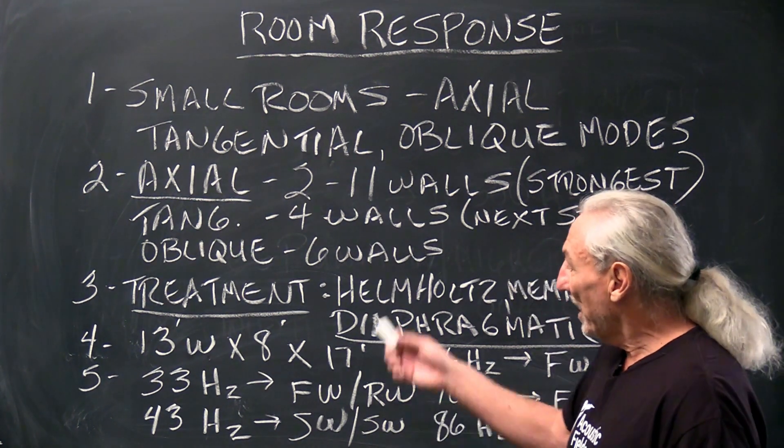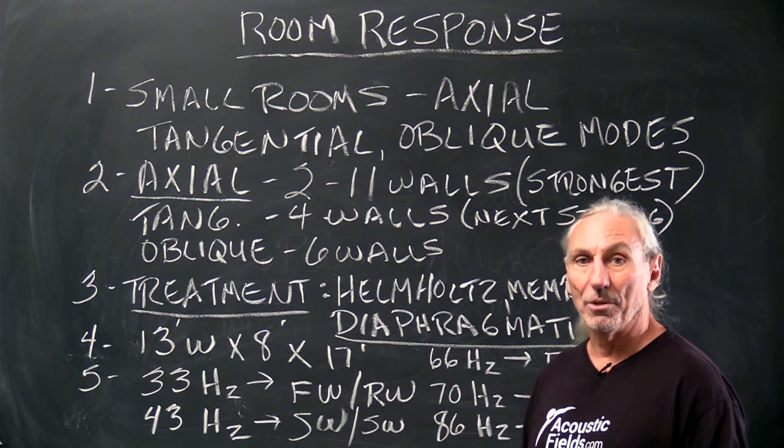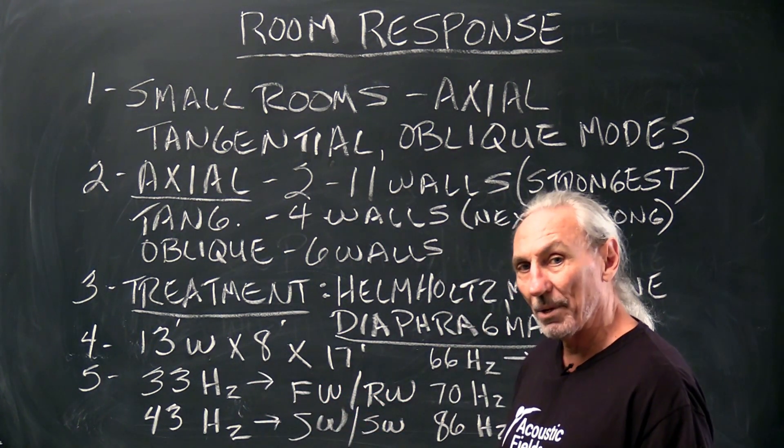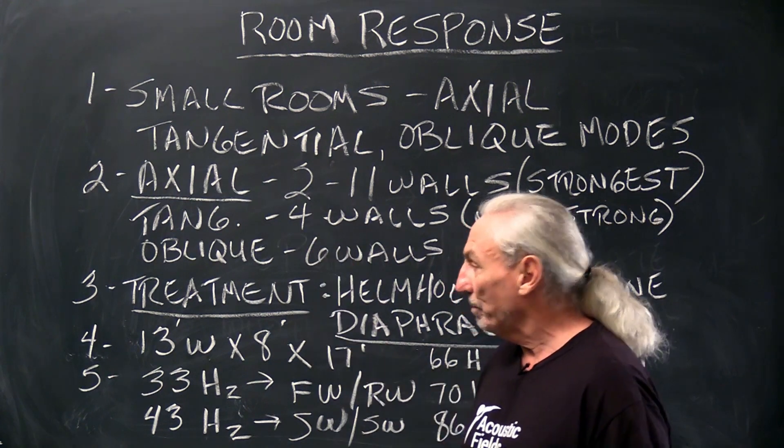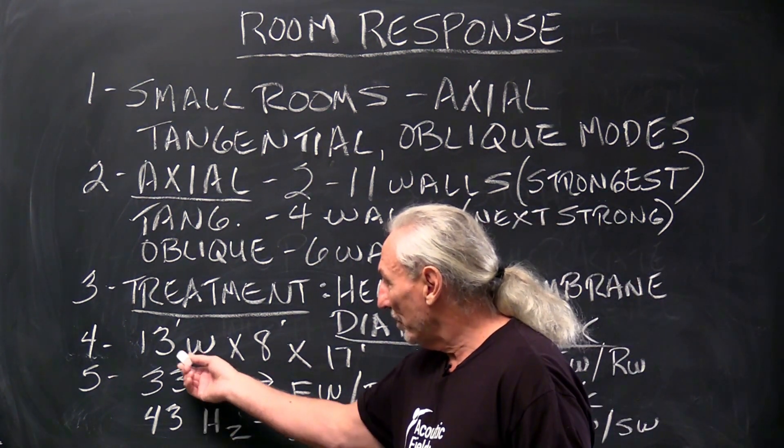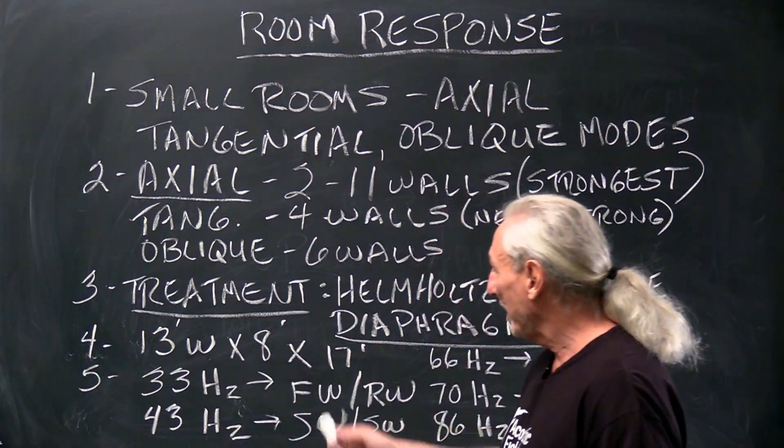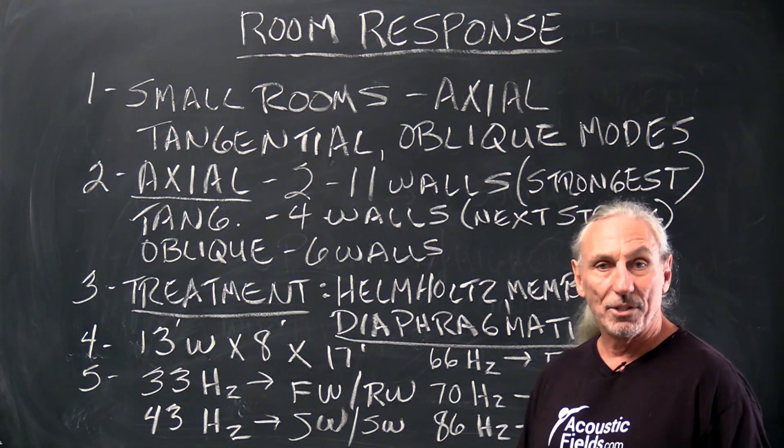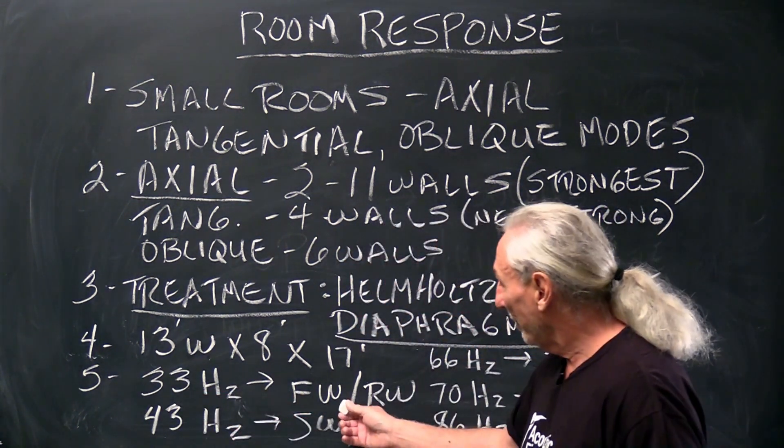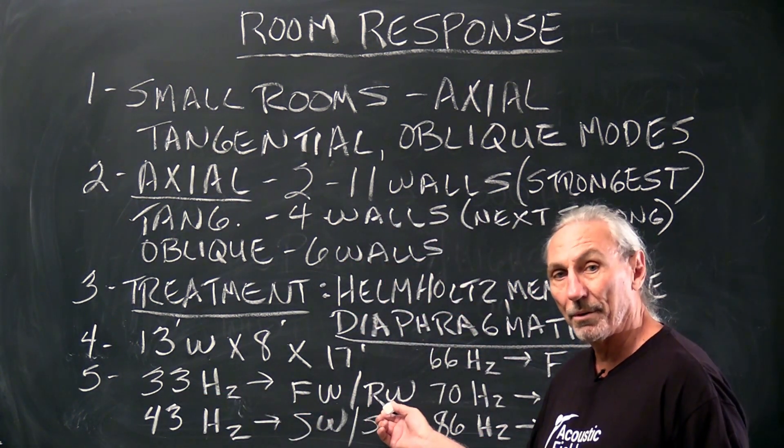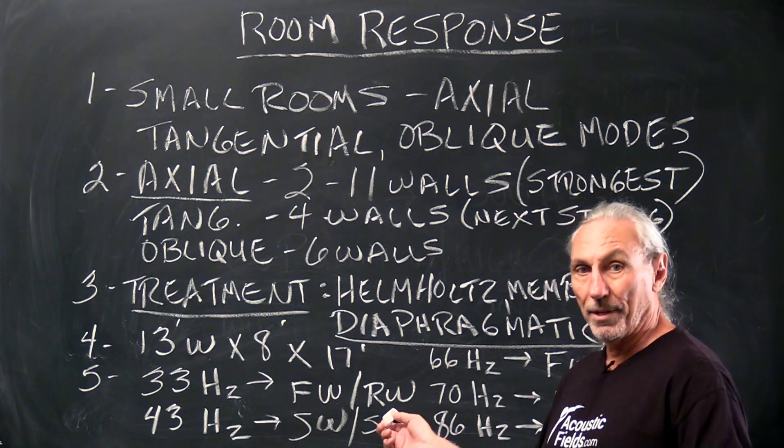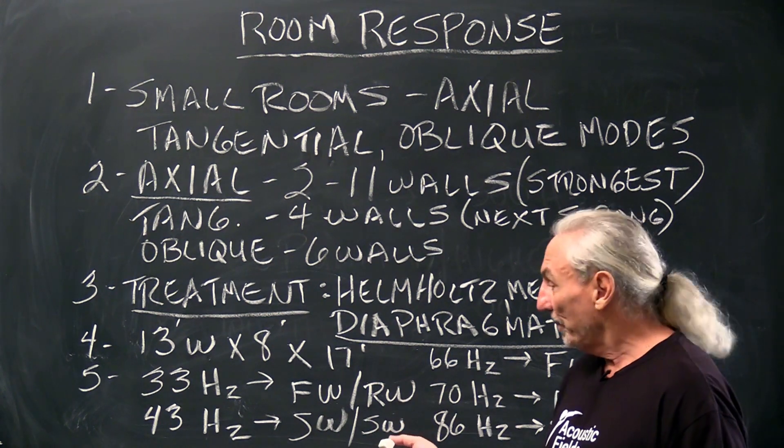So let's take a look at the axial modes again because it's important that you kind of understand the relationship here and I want to focus mainly on the axial because they're the most powerful. So let's take a room that's 13 wide, 8 foot high, 17 foot long, common dimensions I see every day. So at 33 hertz, the problem is front wall to rear wall, the axial modal issues. We'll do another video on how I got this but let's just take my word for it in this video.